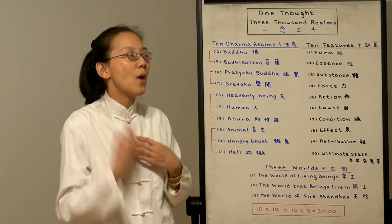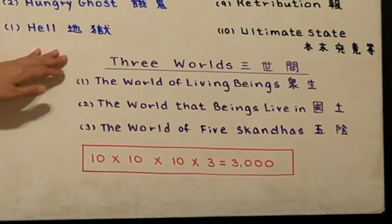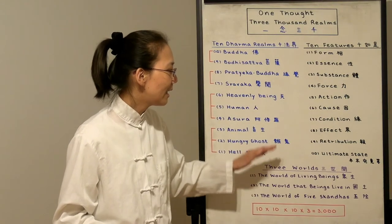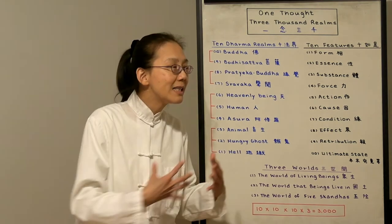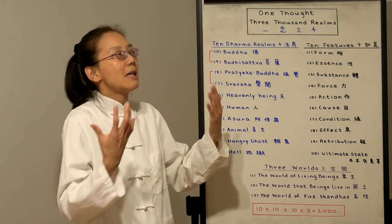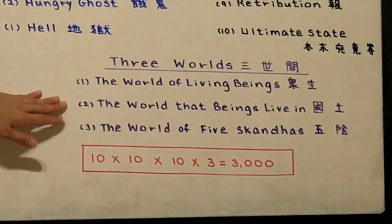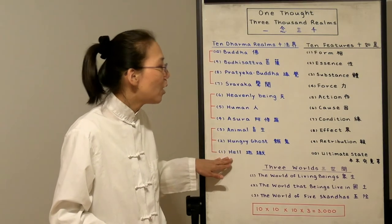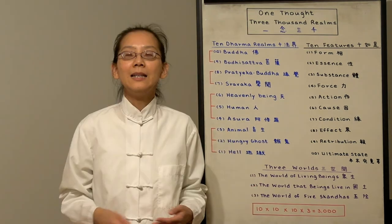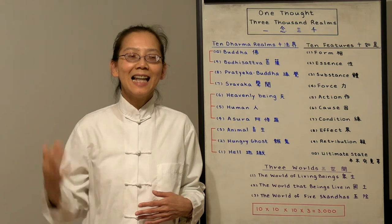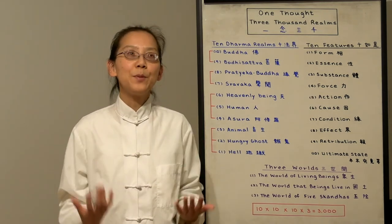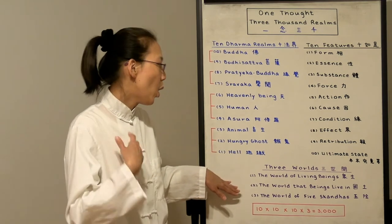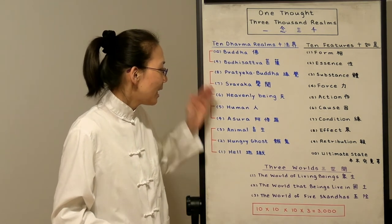This is the entire universe, and the entire universe is in our one thought. Lastly, we have the three worlds. Number 1, the world of living beings. Every realm has the people that they live with. The hell beings, they live with people in suffering together. And Buddha, they live with Bodhisattvas. They are just full of compassion. Number 2 is the world that beings live in. That's the physical place. For example, the hell is full of steel and metal. For Buddha, they live in the place of eternal Quietyan light. That's a place of formlessness. It only has the Buddha nature. Number 3 is the world of five skandhas. The hell beings, they have unwholesome five skandhas. For Buddha, their skandha is emptiness. But it's perfect and it's emptiness.